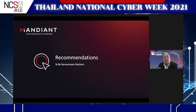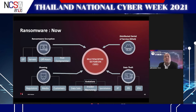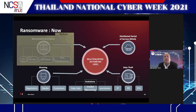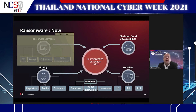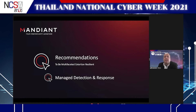Let's close with some recommendations. We talked about backups — they help on the encryption piece, solving the file encryption problem. But the other aspects of multifaceted extortion are not solved by backups. In some cases, those other points of leverage — data theft, shaming, customer notification — could be more painful than the encryption itself. So what can we add beyond having good backups?